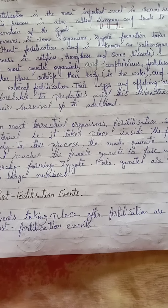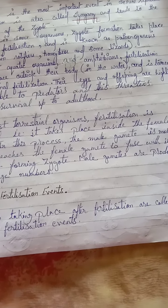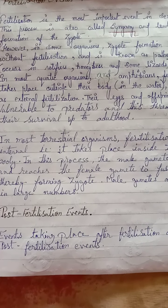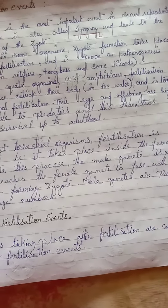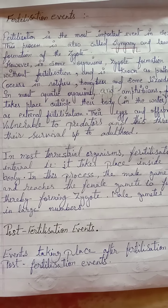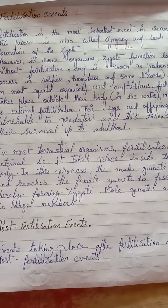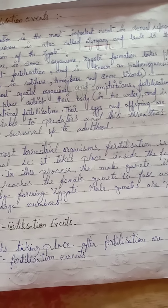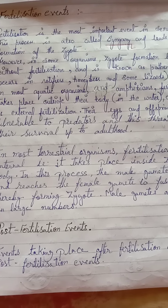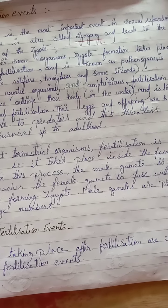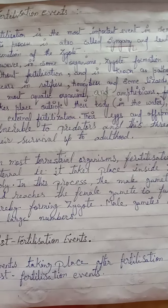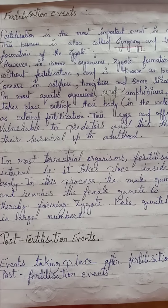In most aquatic organisms and amphibians, fertilization takes place outside their body in the water and is termed as external fertilization. Their eggs and offspring are highly vulnerable to predators, which threatens their survival up to adulthood.